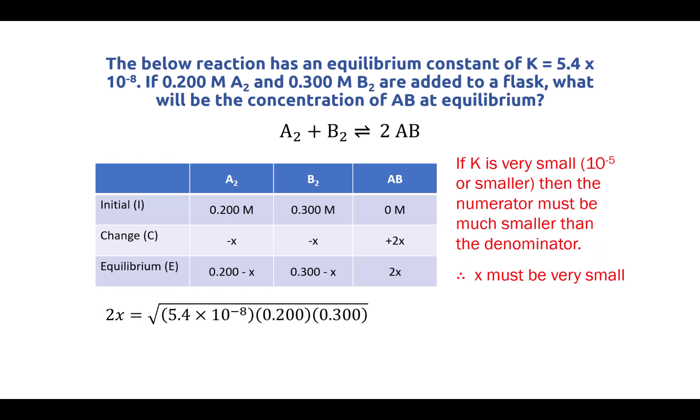So now we have 2x is equal to the square root of the entire right side. We can simplify this even further to get an actual number for x. If we divide both sides by 2, then we get rid of that 2 on the left side and we end up with just x. So x is equal to this whole term under the square root all divided by 2. And that gives us an actual number of 2.85 times 10 to the minus 5. That is our value for x.